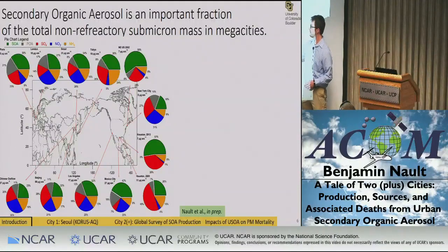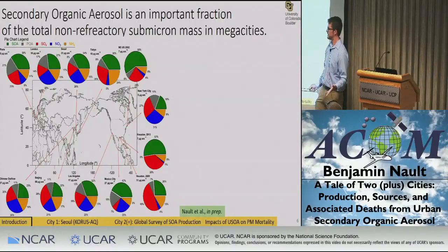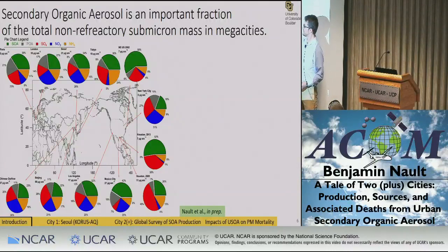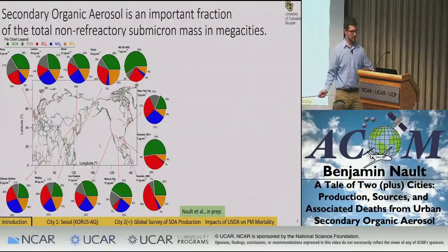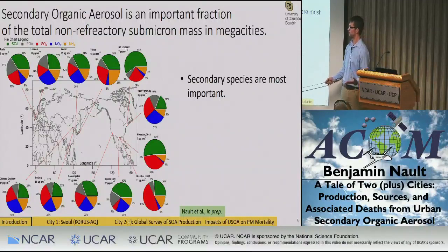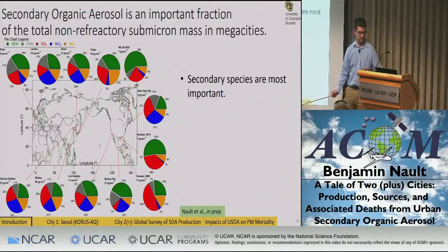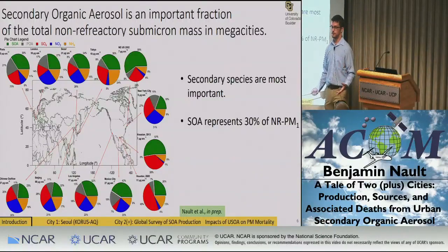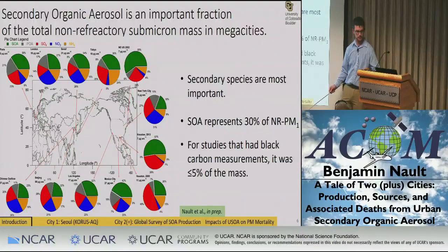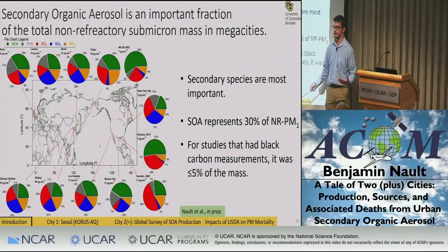The aerodyne aerosol mass spectrometer has been a great tool for understanding the composition and concentration of submicron aerosols. Shown here is an overview of average composition and concentrations from various megacities around the world, where green is secondary organic aerosol, gray is primary organic aerosol, red is sulfate, blue is nitrate, and orange is ammonium. The big takeaway is that most of the submicron aerosol is secondary species — not directly emitted, but formed from oxidation of primary gases such as NOx, SO2, and hydrocarbons. Secondary organic aerosol on average contributes 30% of total mass.